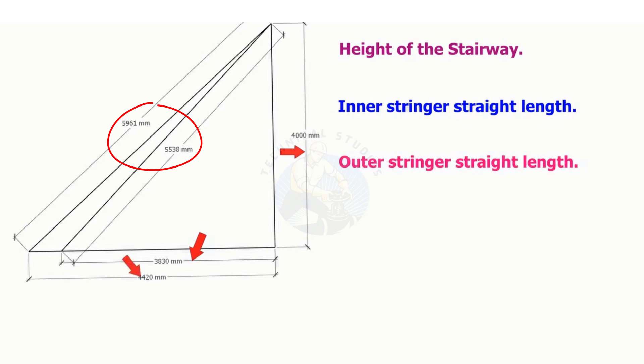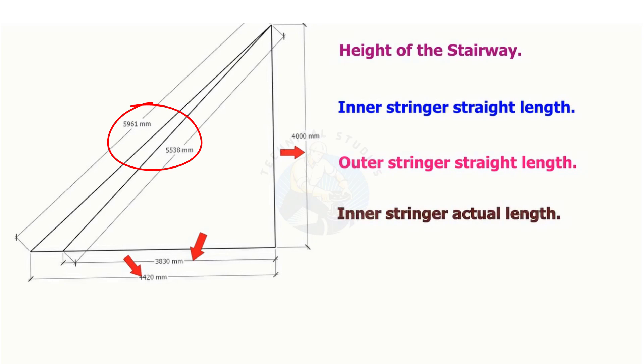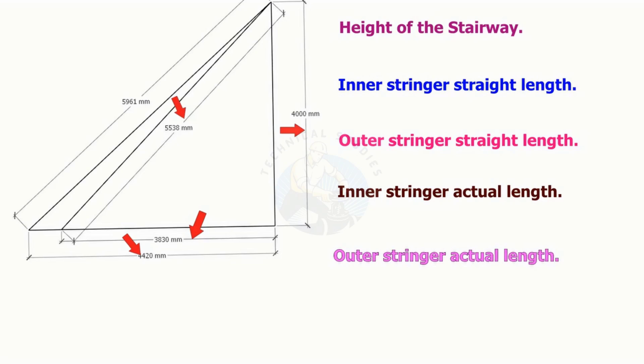These are the actual lengths of the stringers. The length of the inner stringer is 5,538 millimeters. The length of the outer stringer is 5,961 millimeters.